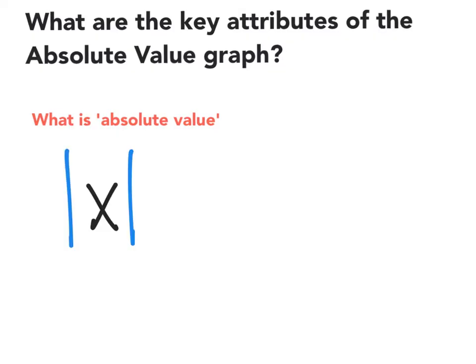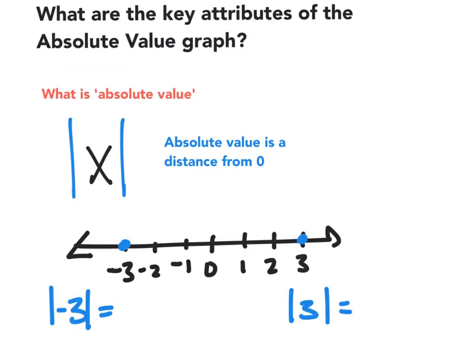You may remember that absolute value is indicated by these two bars. And all absolute value is, is a distance from zero. If we think about it in terms of a number line, like let's look at negative three and three, and we're going to take the absolute value of each of those. How far away are each of them from zero?